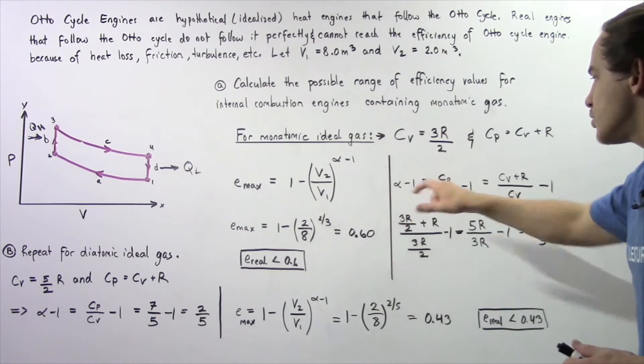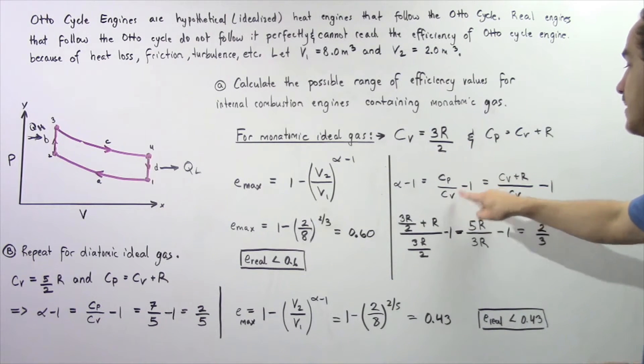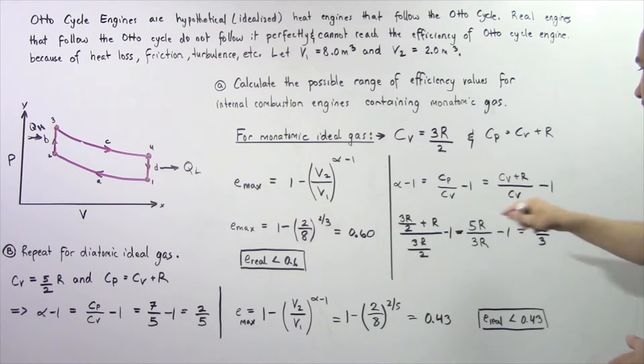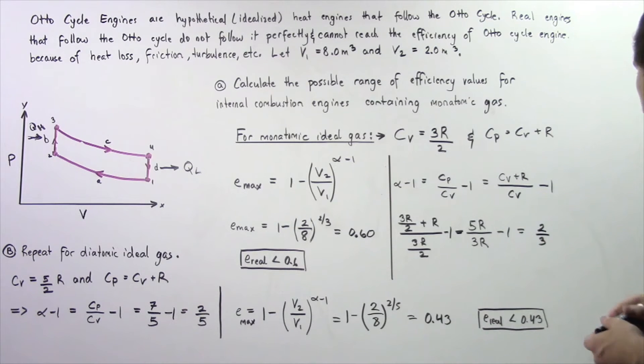So alpha minus 1 is equal to Cp divided by Cv minus 1. Now Cp is equal to Cv plus R. And Cv is simply equal to, well it's Cv for now.